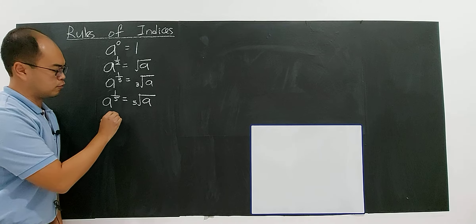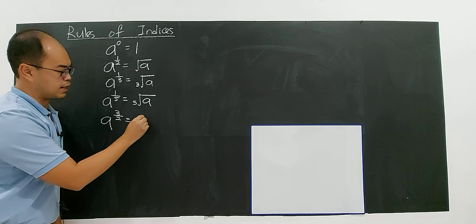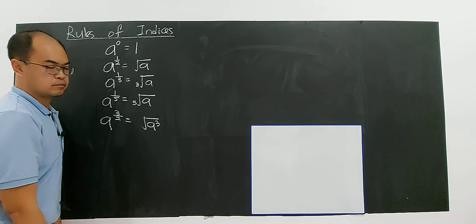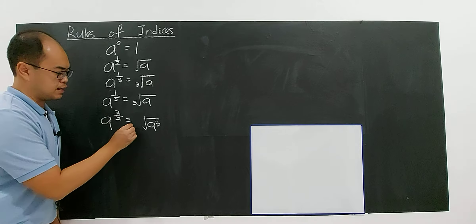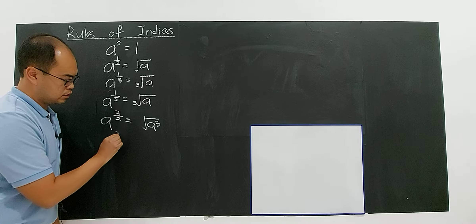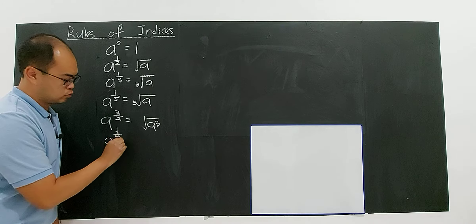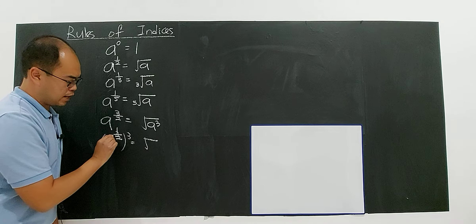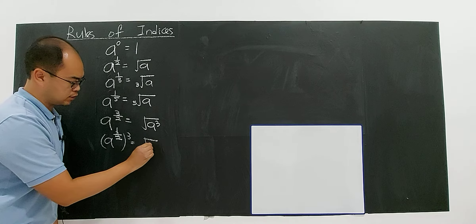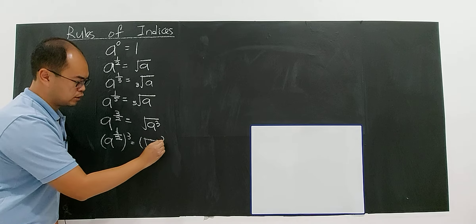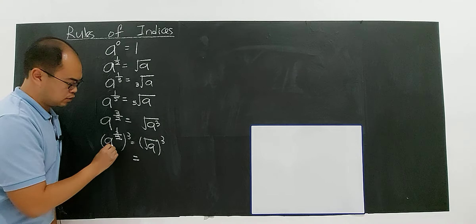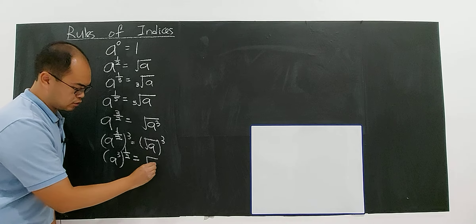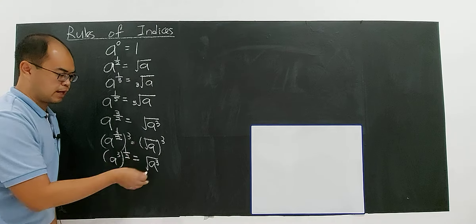If you have A to the power of 3 over 2, you write it as the square root of A to the power of 3. You can see that the denominator 2 gives the square root, and the 1 over 2 to the power of 3 gives you the power inside. Or you can write it as the square root of A to the power of 3, or equivalently as A to the power of 3 under a square root — they carry the same meaning.